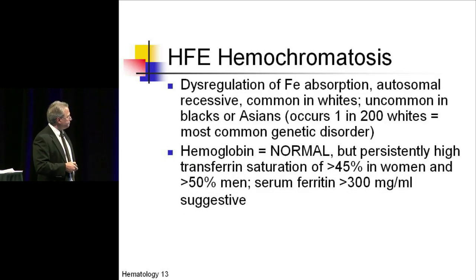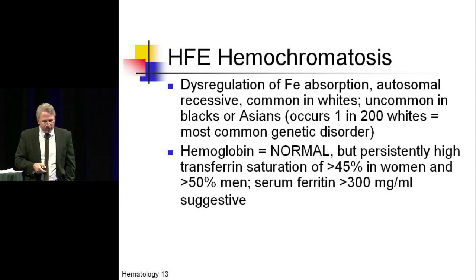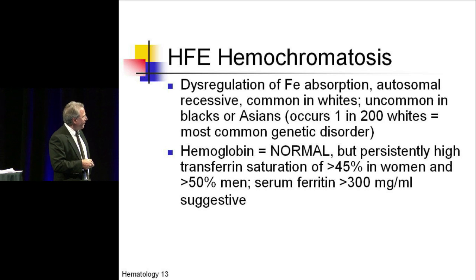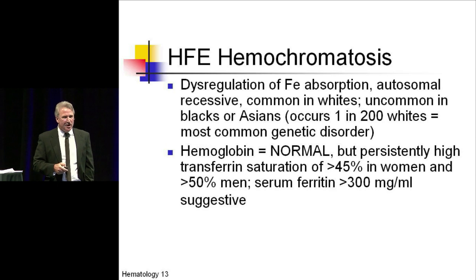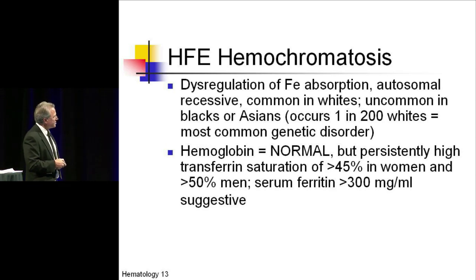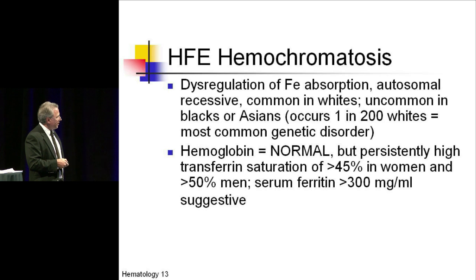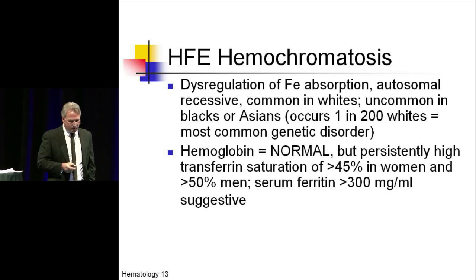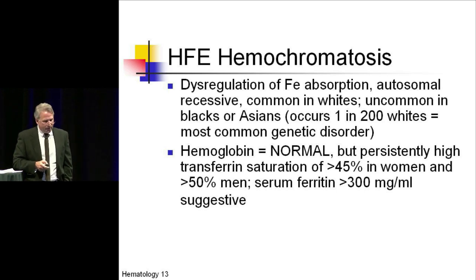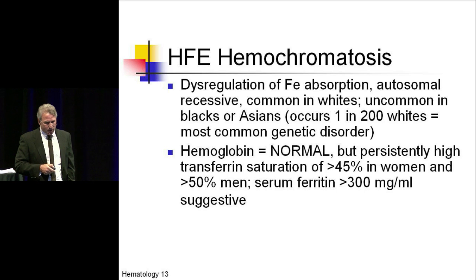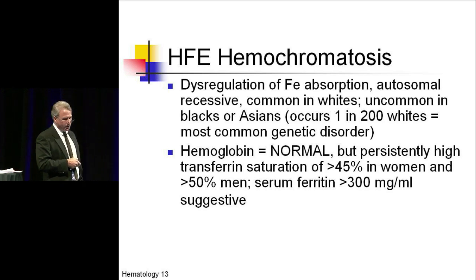Hemochromatosis is a subset of iron overload and is an autosomal recessive condition. It's most common in Caucasians — roughly one in 200 — and is considered one of the most common genetic disorders we'll see. The hemoglobin is normal; these patients are not polycythemic. The key findings are a persistently high transferrin saturation index, typically greater than 45% in women and 50% in men, and an elevated serum ferritin — sometimes close to 1,000 — in the absence of an acute phase response.